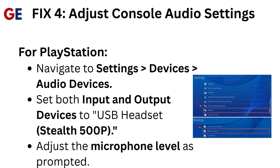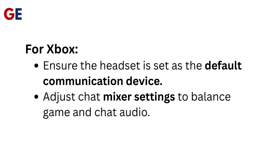Fix 4: Adjust console audio settings. For PlayStation, navigate to Settings > Devices > Audio Devices. Set both input and output devices to USB headset, Stealth 500p. Adjust the microphone level as prompted. For Xbox, ensure the headset is set as the default communication device. Adjust chat mixer settings to balance game and chat audio.